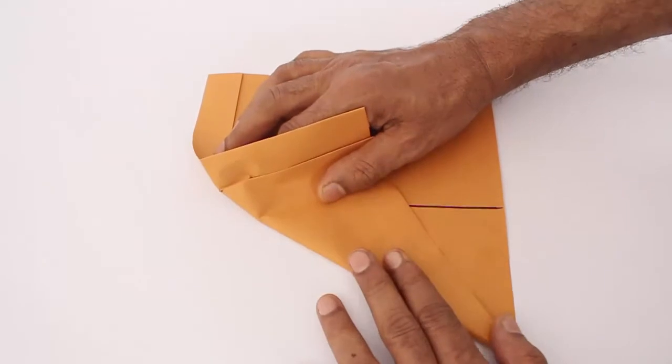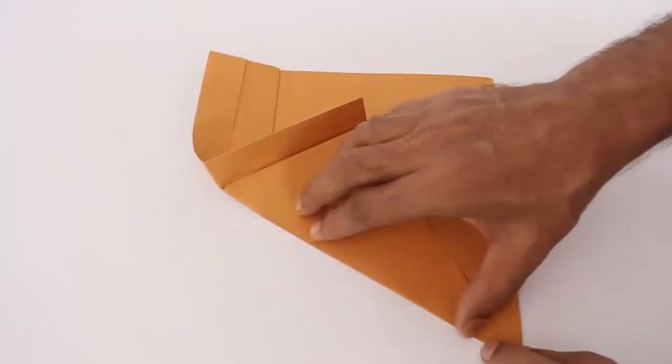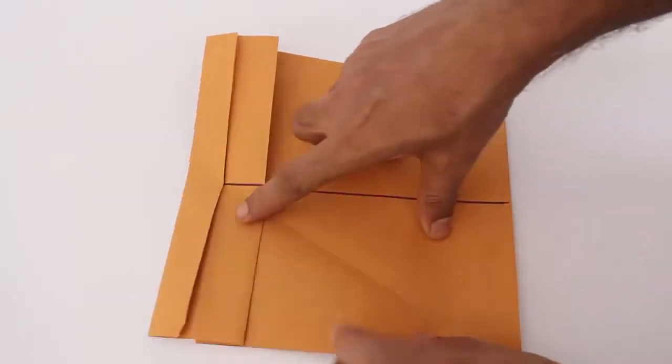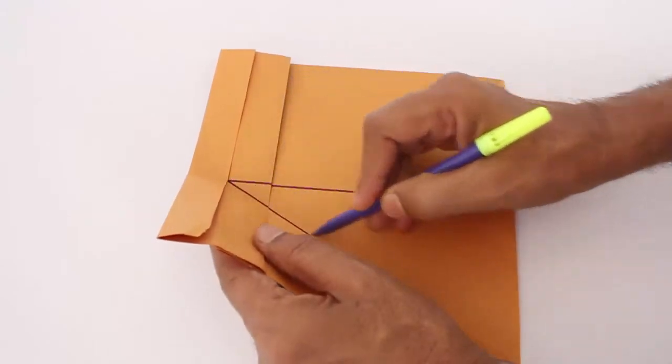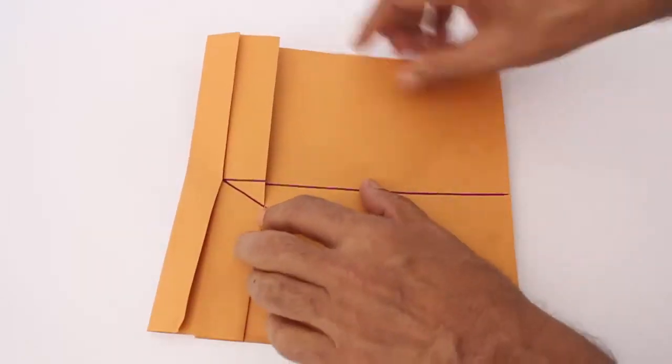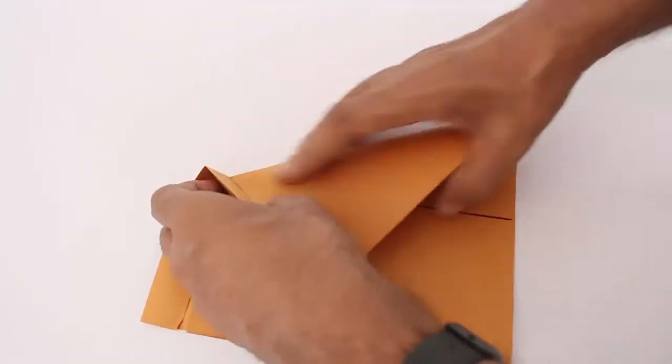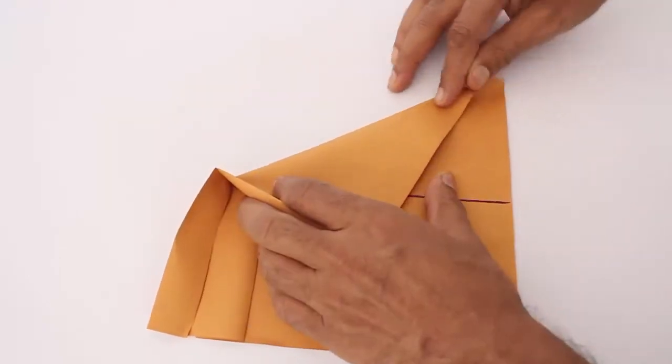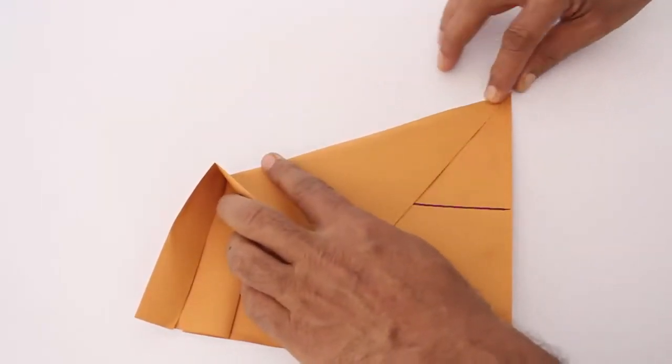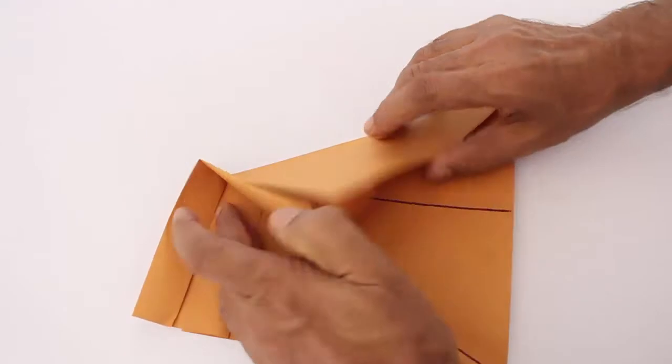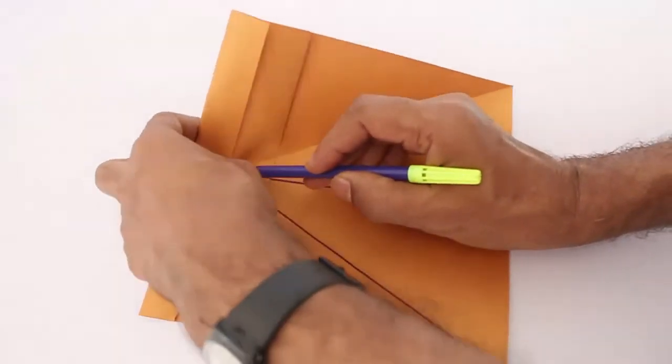Now fold the mark point on the midline to the bottom left corner and this will produce a slant line which would be one side of the equilateral triangle. Repeat the same for the right hand corner.